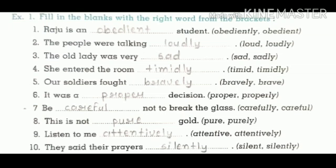Third: 'The old lady was very ___.' The old lady was very sad — so the answer is 'sad.' Fourth: 'She entered the room ___.' How did she enter? Timidly — meaning fearfully. We need an adverb here because we are describing how she entered, so the answer is 'timidly.' As I explained before, adverbs describe how, when, where — so 'timidly' describes how she entered.